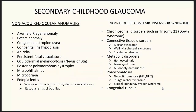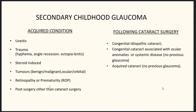Secondary childhood glaucoma associated with non-acquired ocular anomalies includes Axenfeld-Rieger anomaly, Peters anomaly, congenital ectropion uvea, aniridia, Sturge-Weber, and persistent fetal vasculature. Associated with non-acquired systemic diseases includes chromosomal disorders such as trisomy 21 Down syndrome, connective tissue disorders like Marfan syndrome, metabolic disorders like homocystinuria and mucopolysaccharidosis, neurofibromatosis, Sturge-Weber syndrome, and Klippel-Trenaunay-Weber. Acquired conditions include uveitis, trauma, steroid-induced, and tumors including glioma, malignant ocular or orbital tumors, and retinopathy of prematurity. Glaucoma following cataract surgery includes congenital idiopathic cataract, congenital cataract associated with ocular anomalies, and acquired cataract in the presence of previous glaucoma.